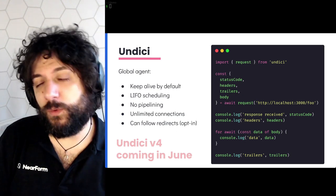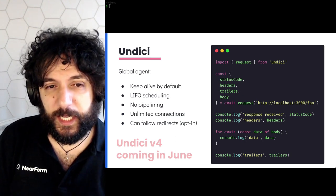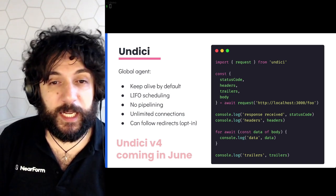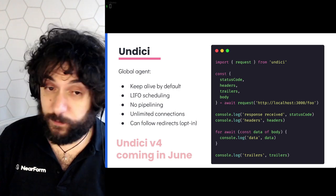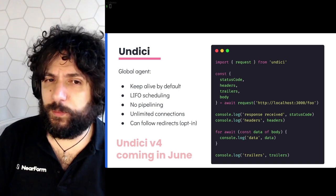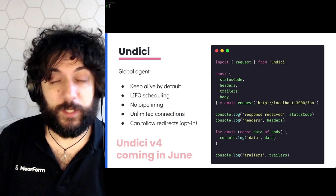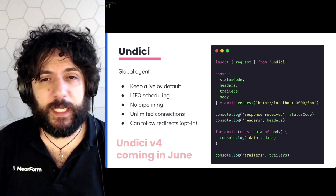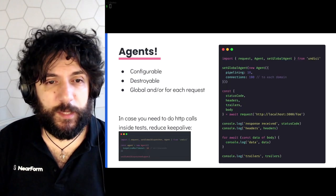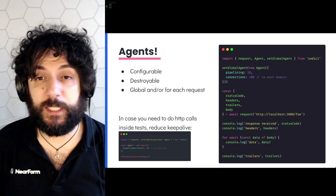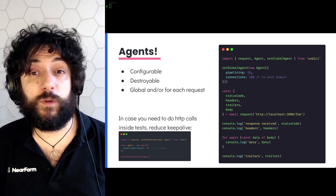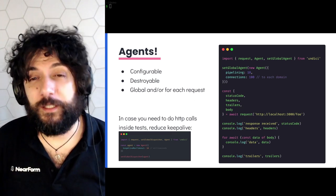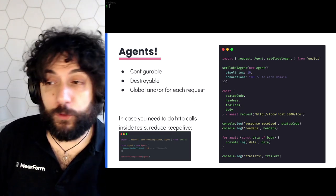How does undici work? Undici is a new library for Node, and it keeps connections alive by default so you don't need to configure a keep-alive agent. It also adds a LIFO scheduler by default. It does not do any pipelining by default, but it can be configured to do so, and it can create a limited number of connections. You can also follow redirects. It uses promises, though you can also use callbacks. You can configure a global agent and configure pipelining factors and the number of connections to each destination.